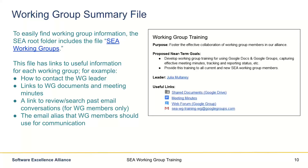Generally that third web forum link is only accessible to members of the working group, and then also the email alias that working group members should be using for communication.